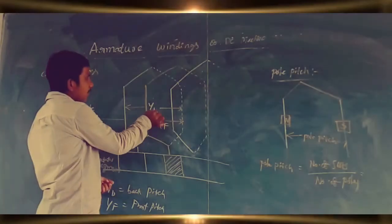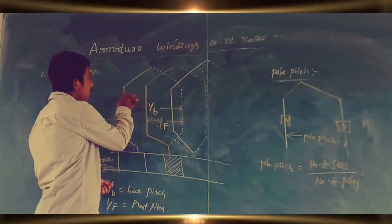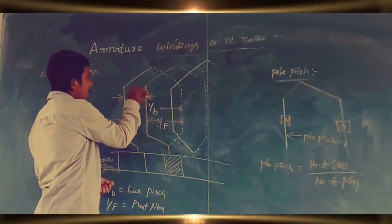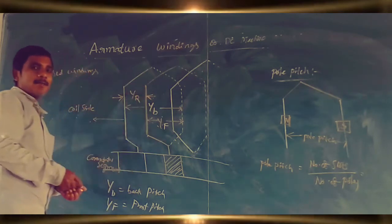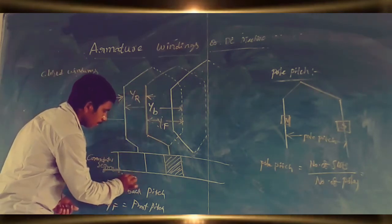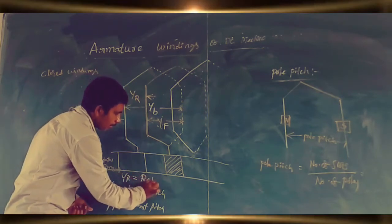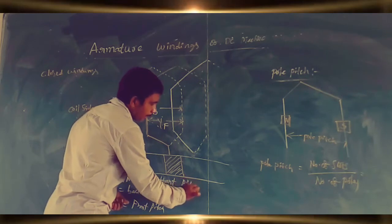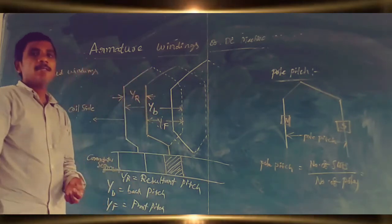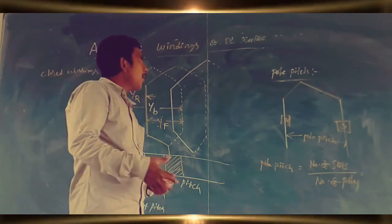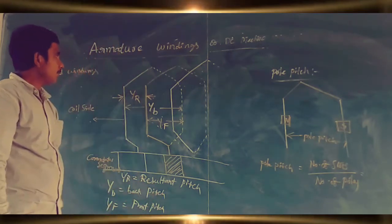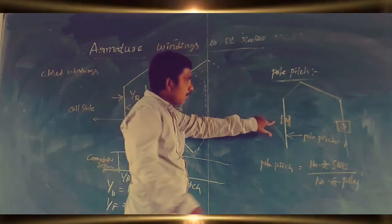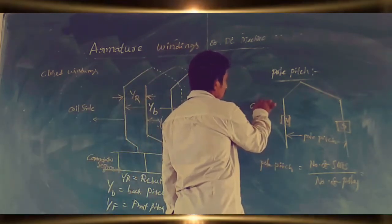Now we go for resultant pitch. The distance measured in terms of armature conductors between the starting of one coil to the starting of the next coil is called resultant pitch. We can also say that it is the difference between YB and YF — that is, back pitch minus front pitch equals resultant pitch.